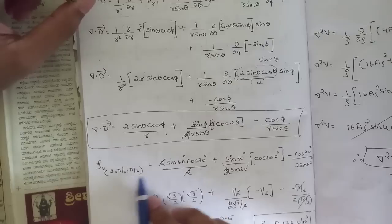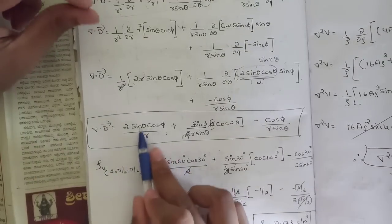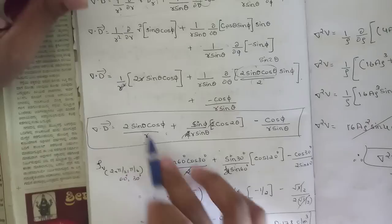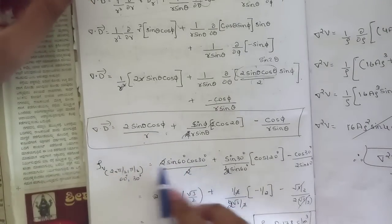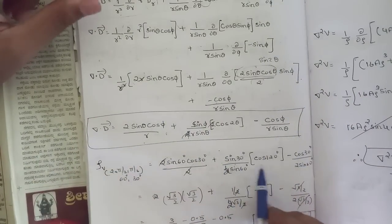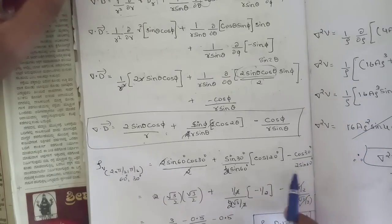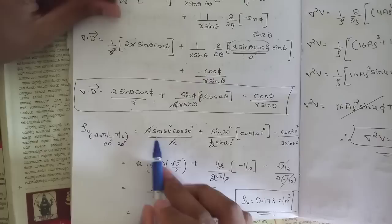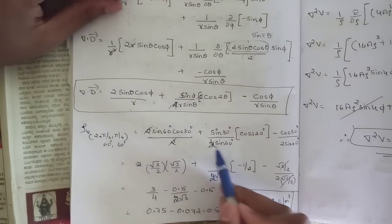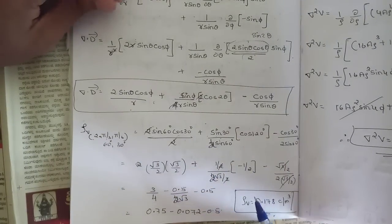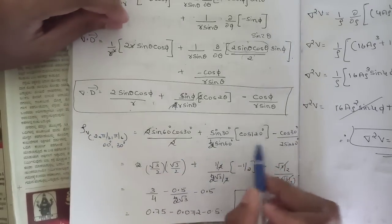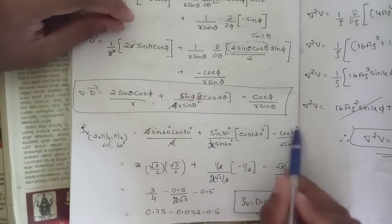Evaluating ρv at P = (2, π/3, π/6): θ = π/3 (60°), φ = π/6 (30°), r = 2. Computing each term: the first term involves sin60° and cos30°, with the 2s canceling. The second term involves sin30°, 2sin60°, and cos120°. sin60° = √3/2, cos30° = √3/2, sin30° = 1/2, cos120° = −1/2.